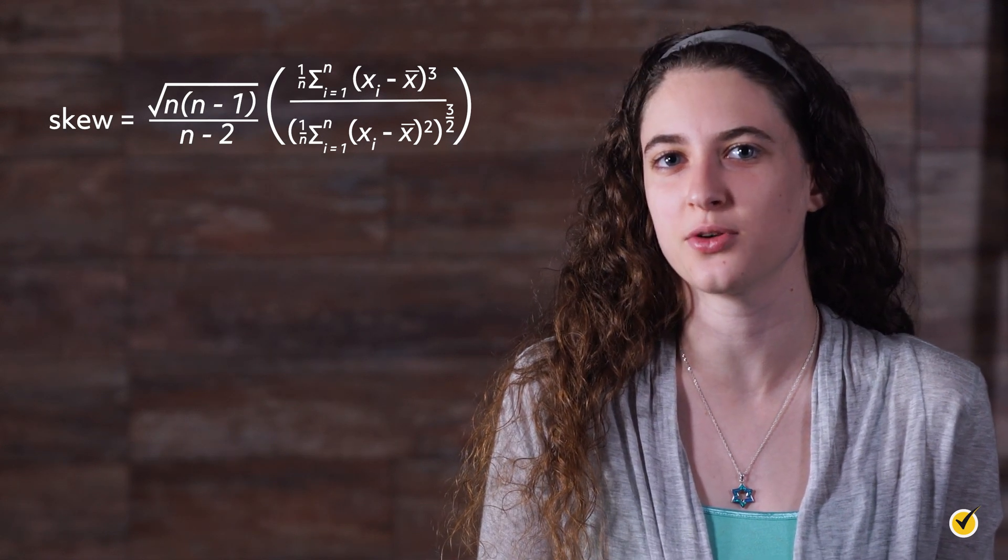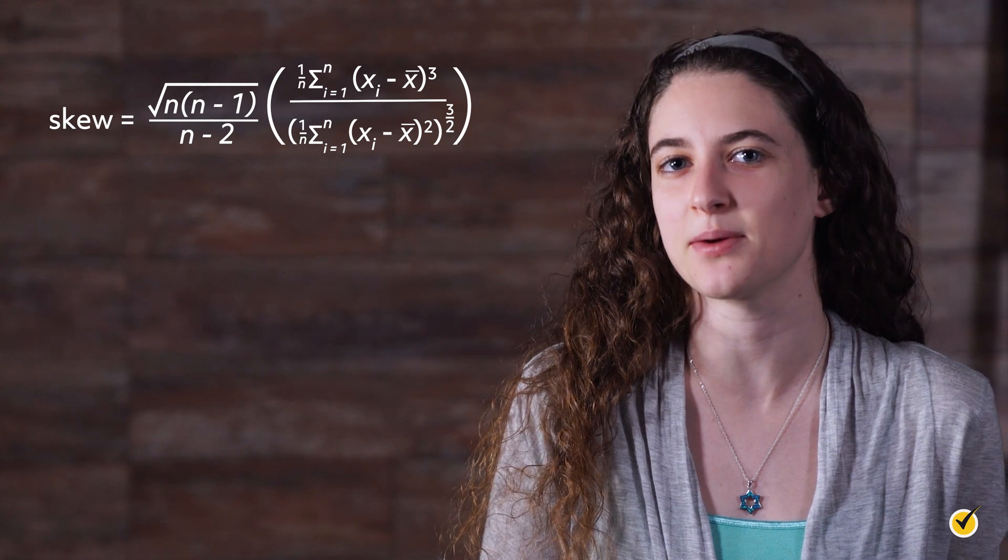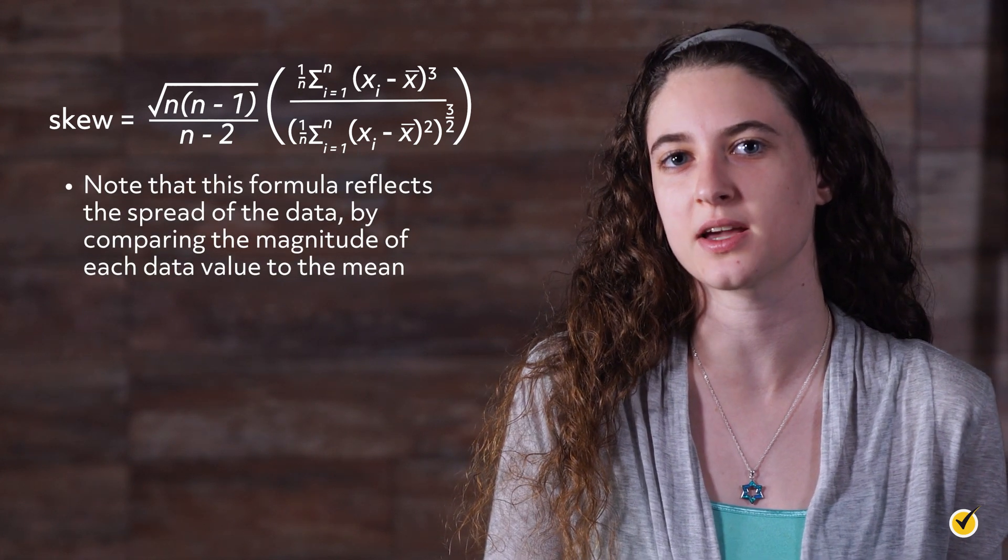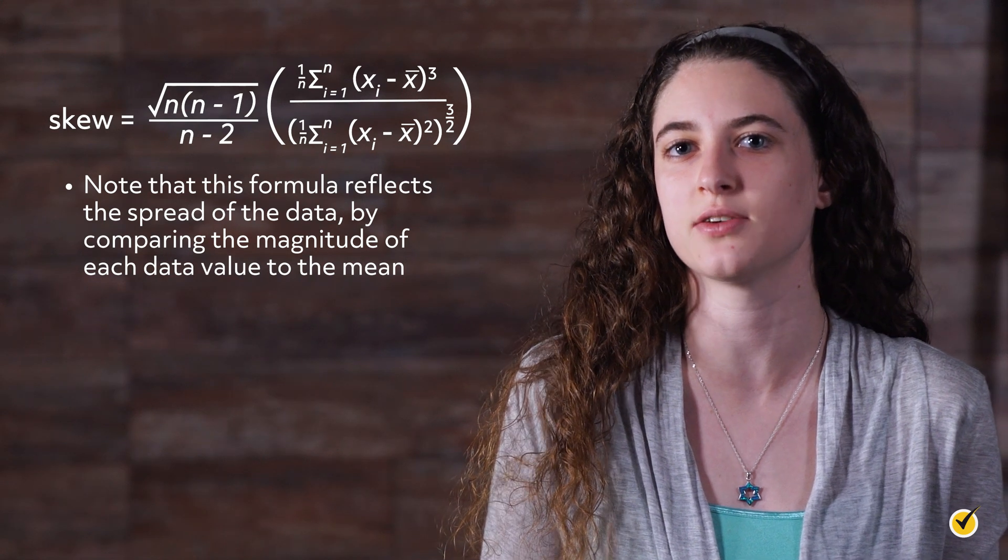Here is the formula used to quantify skew. In this formula, n represents the size of the sample, x sub i represents each individual data value, and x bar represents the sample mean. Note that this formula reflects the spread of the data by comparing the magnitude of each data value to the mean.